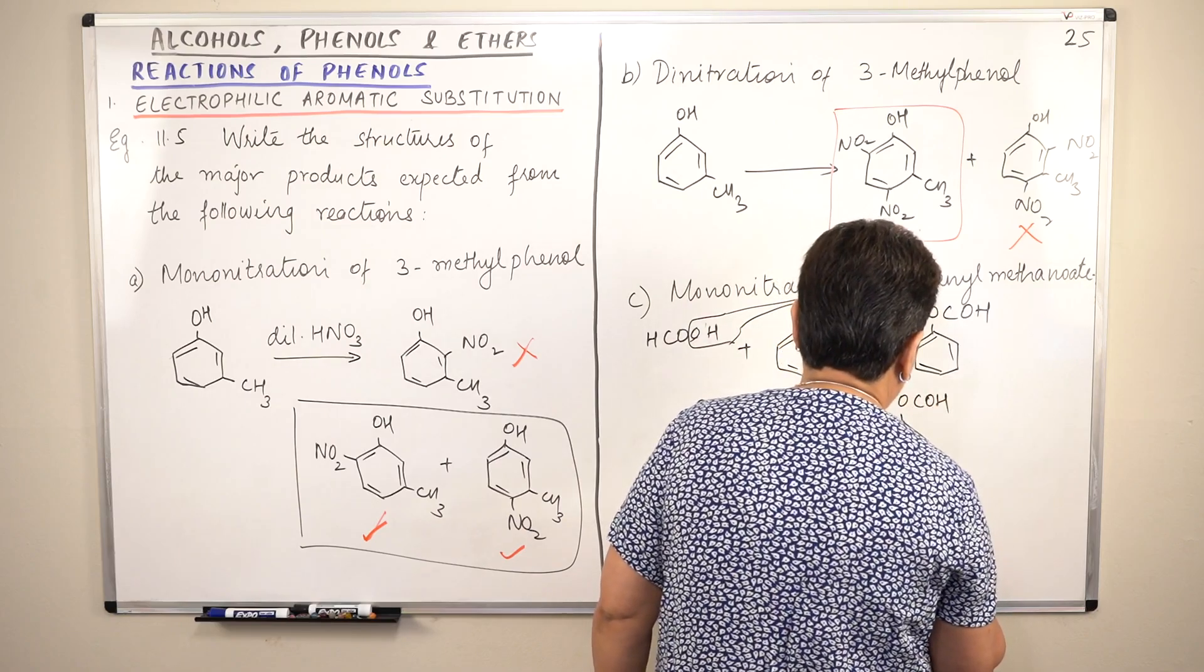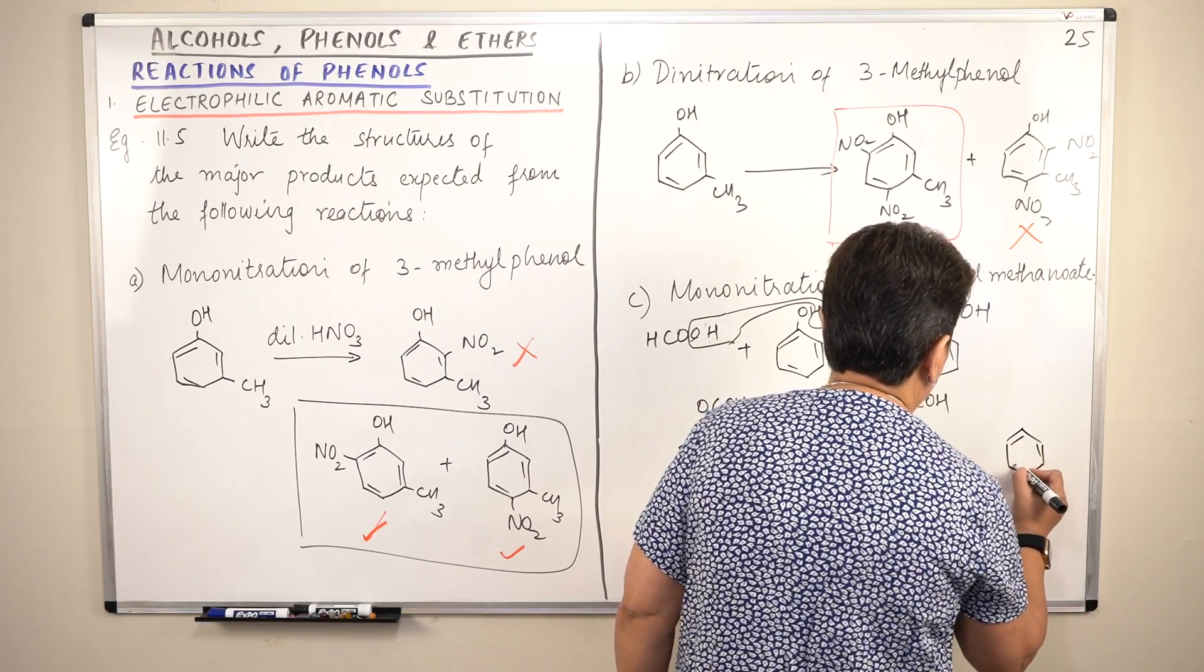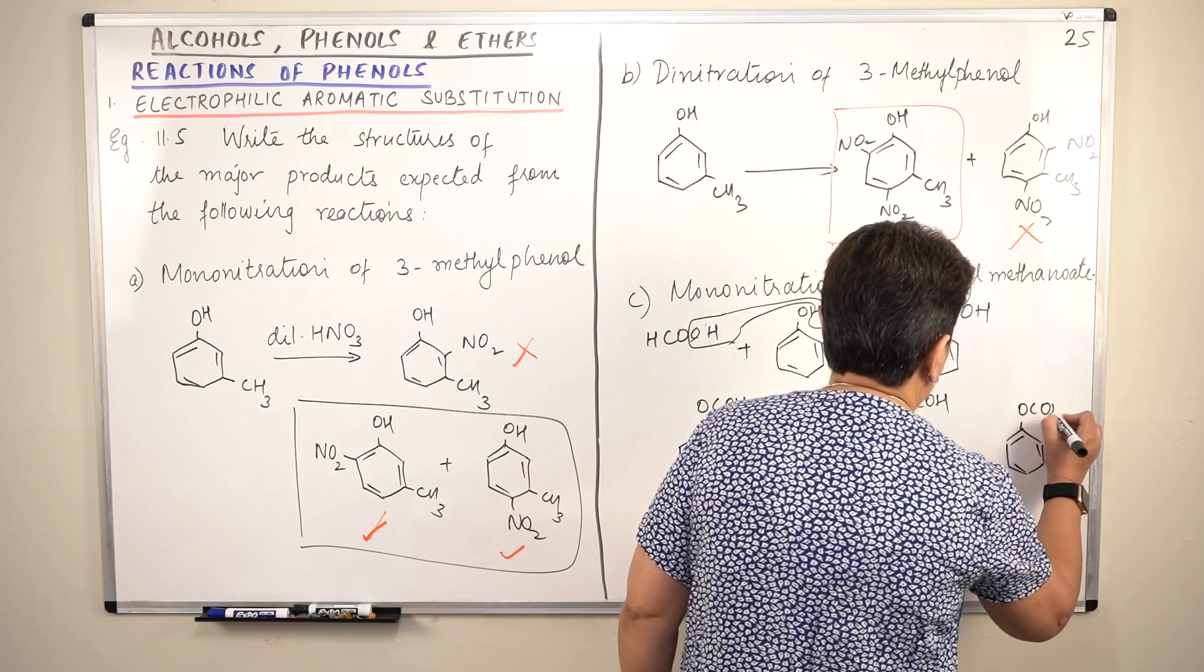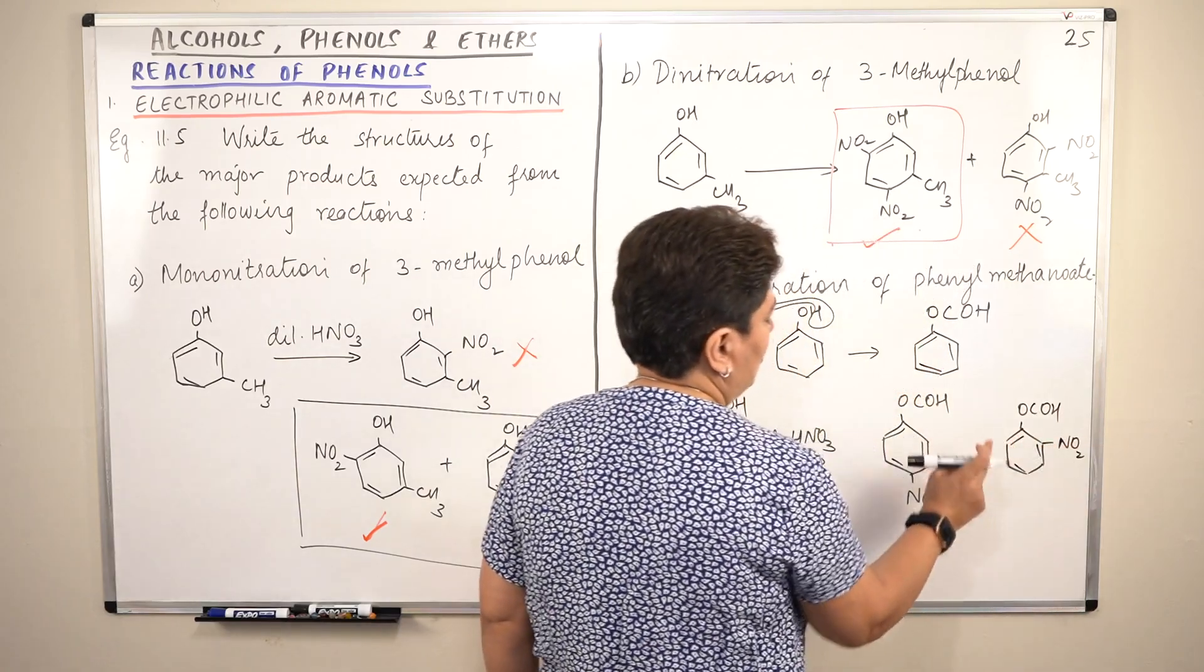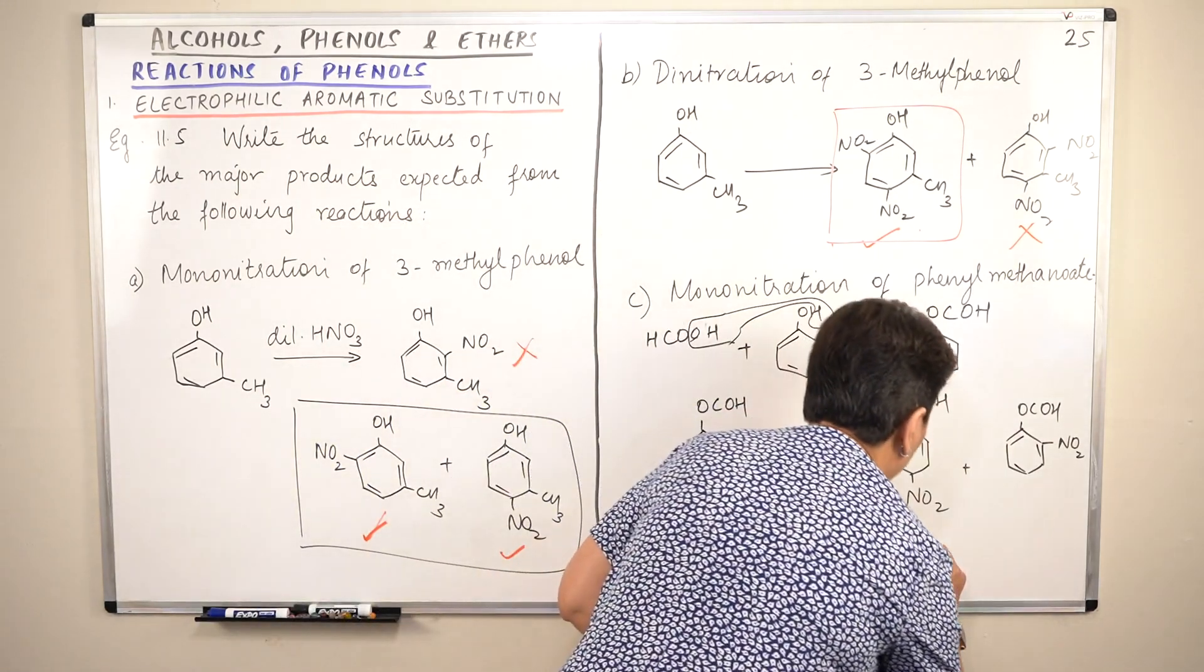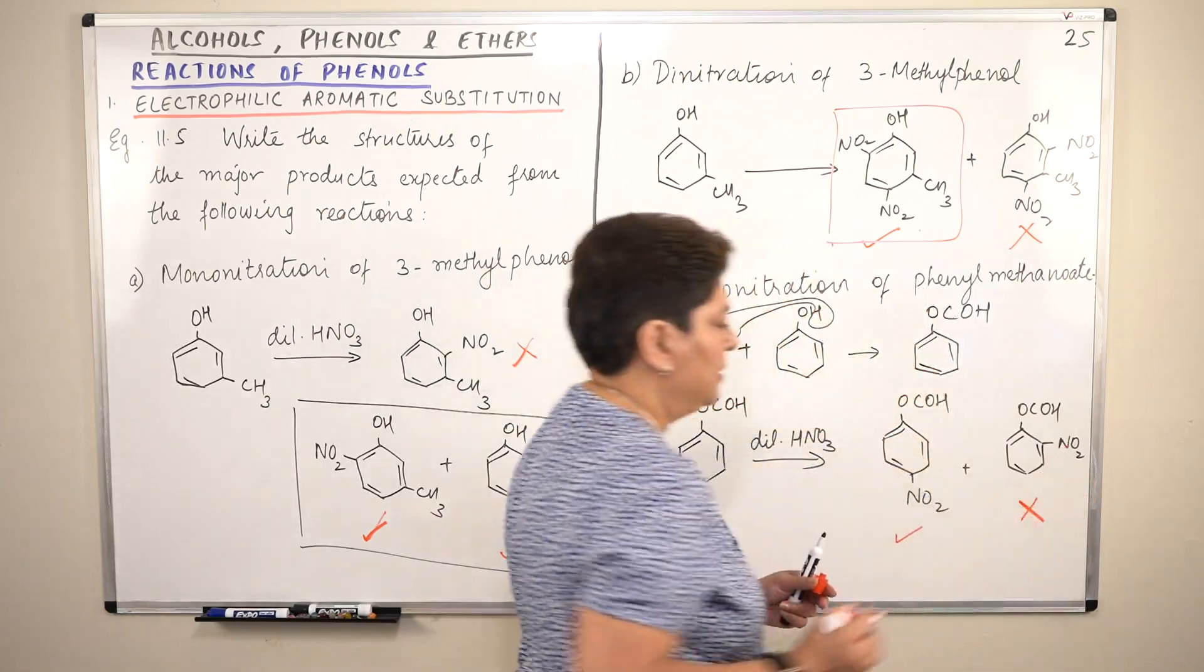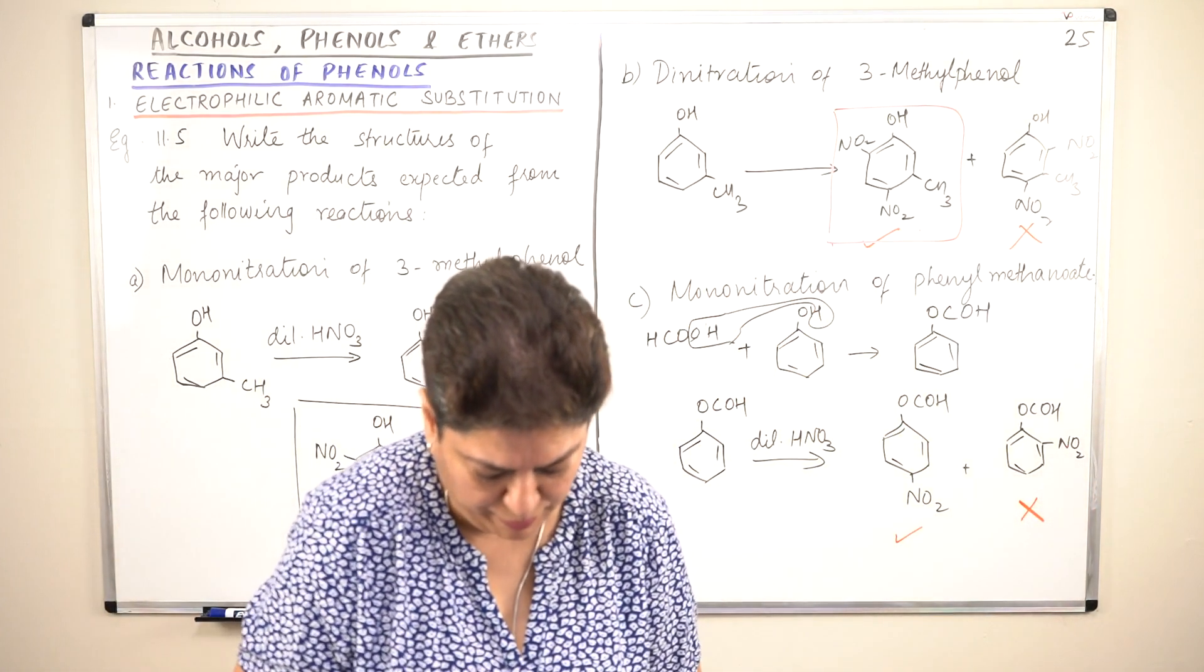OCOH. So nitro group comes here, plus here. Again you have OCOH. Do you see NO2 closer, either this or this? Which one would be the major product? Obviously the para isomer would be the major product, and the ortho isomer would be the minor product.